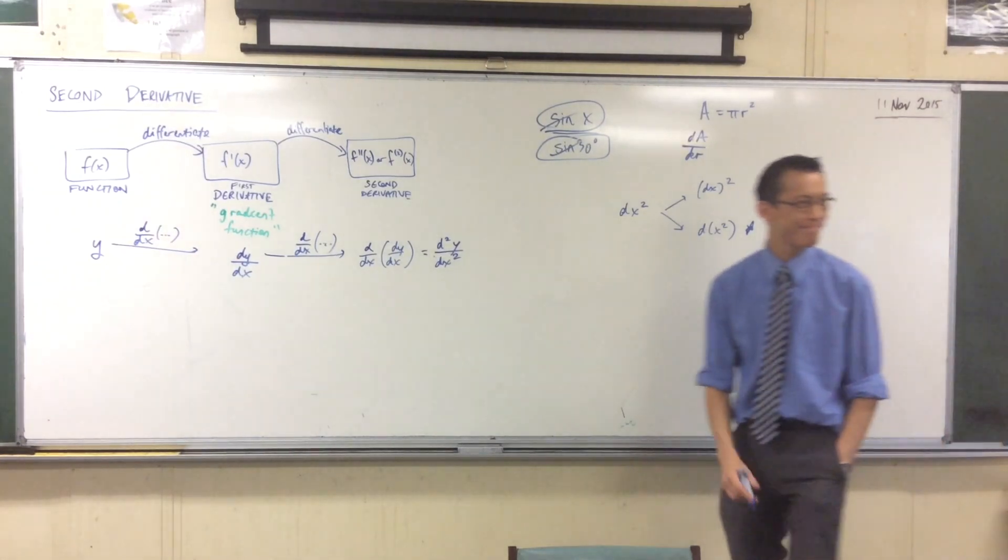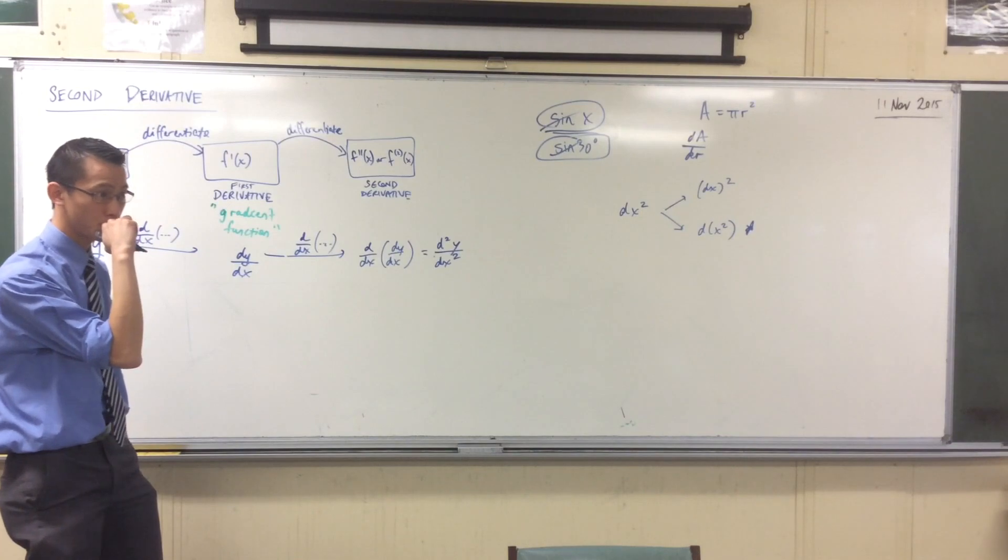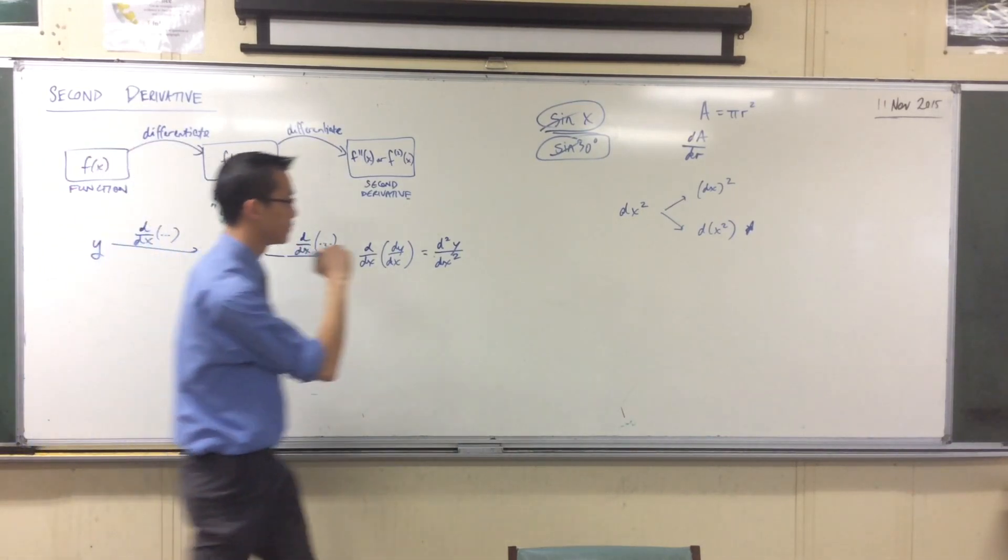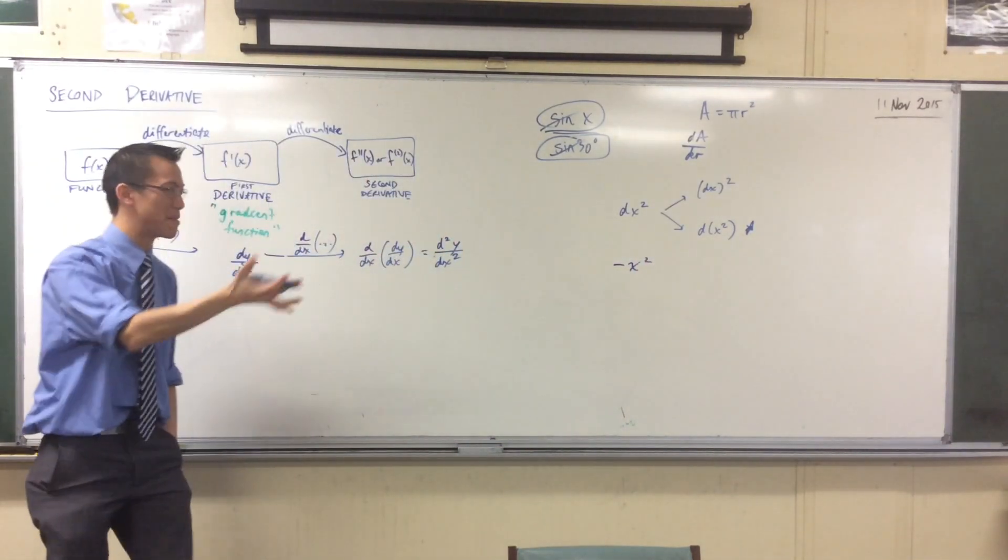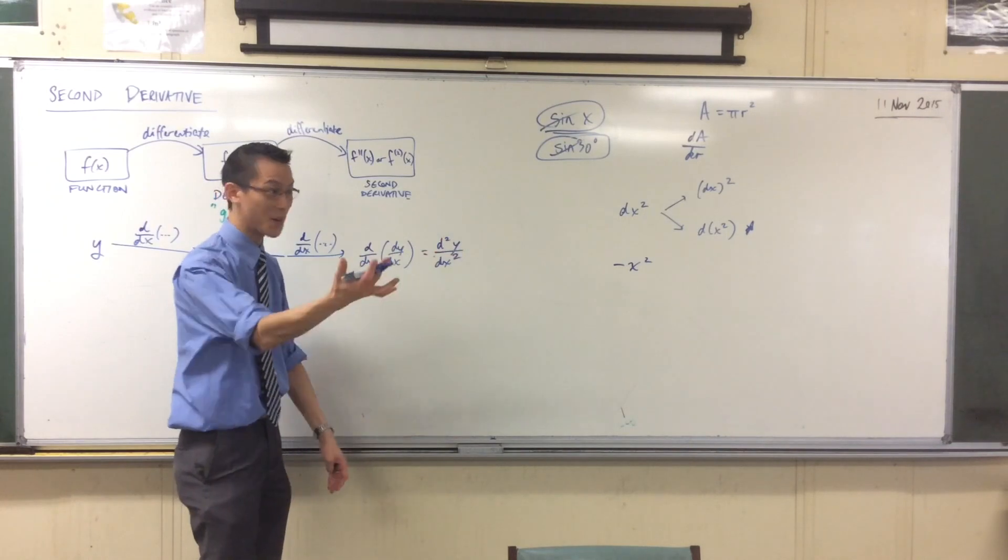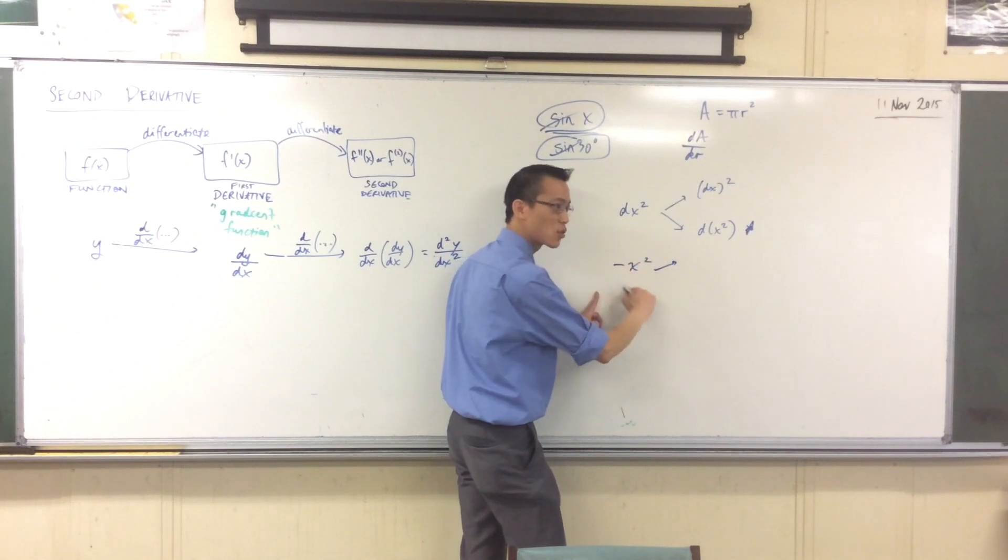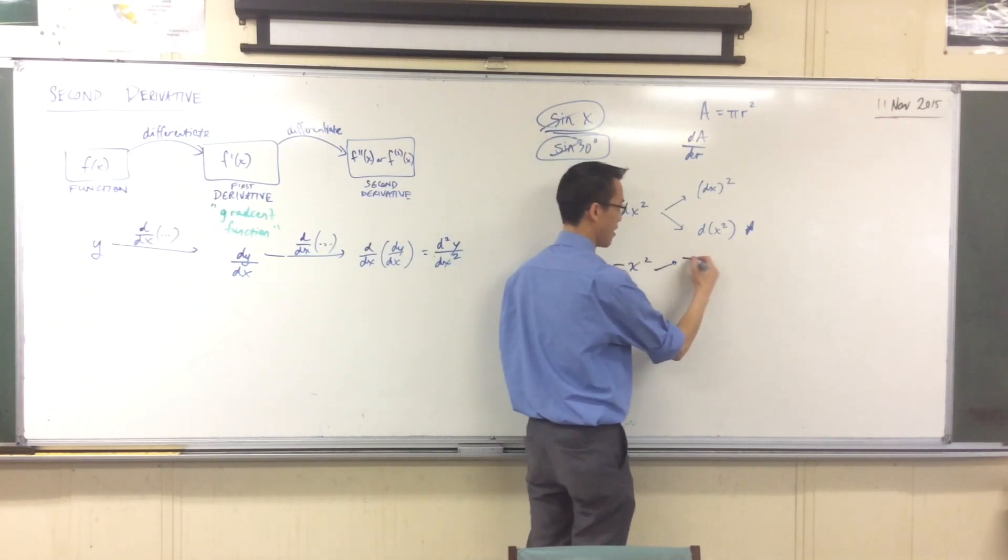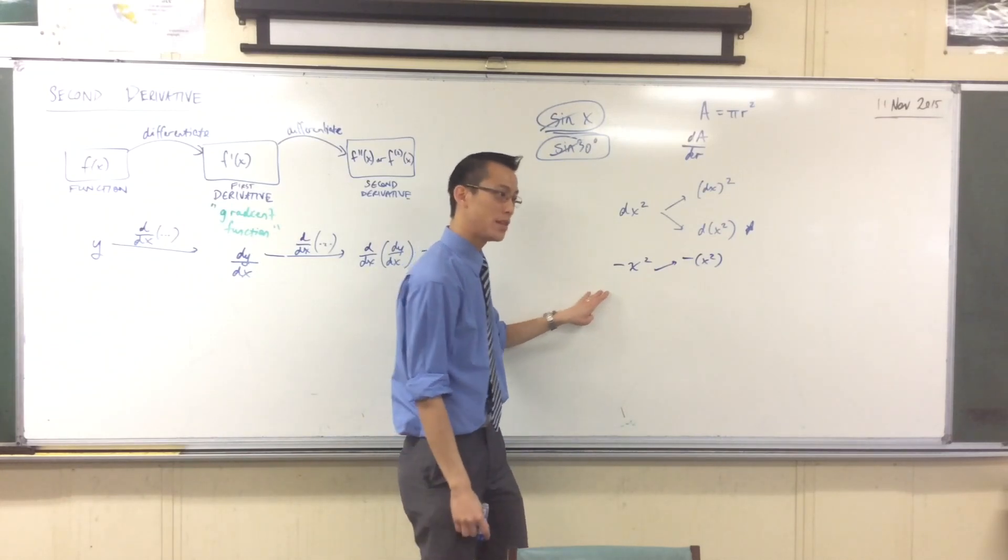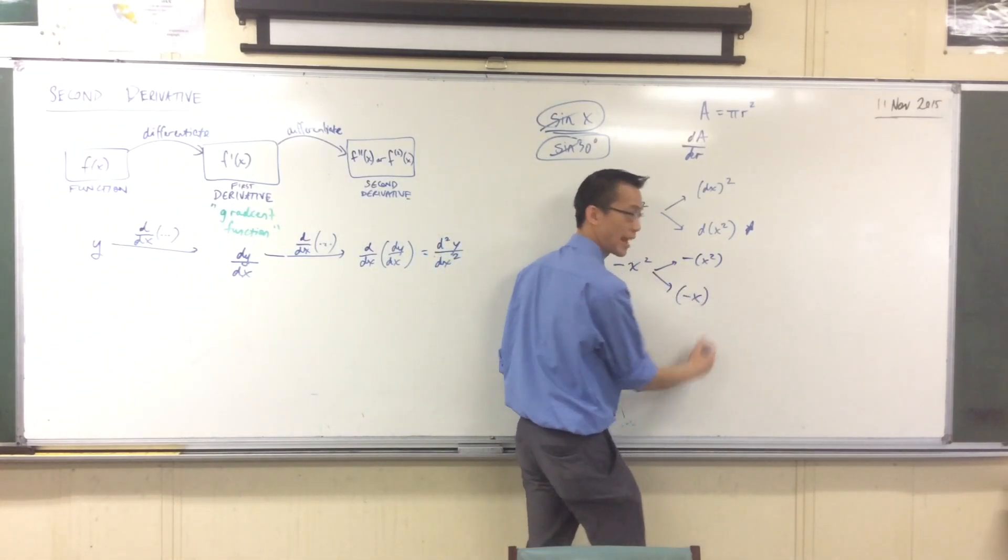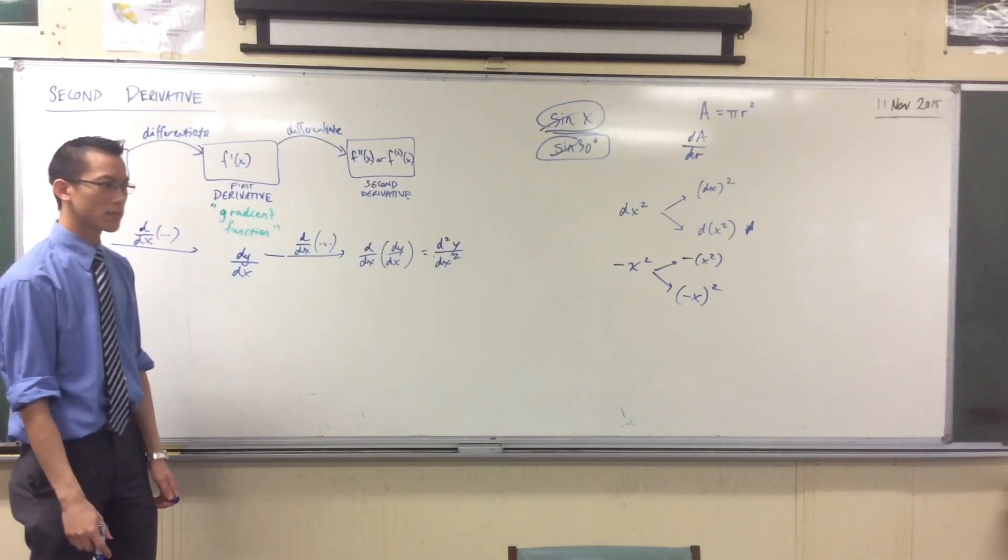In an exam, when it says negative x squared, is that negative of x squared or negative x whole thing squared? This is the perfect example of why dx squared just by itself is not a good notation. When I see this, what I'm saying is the x gets squared first, and then you slap a minus sign on the front. Had I wanted the negative to be squared as well, I would have put the negative in there and then square it. So there will always be a bracket if it's the negative.